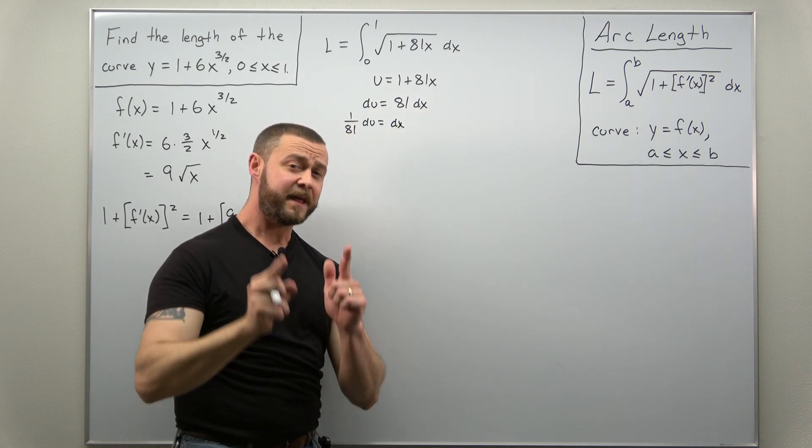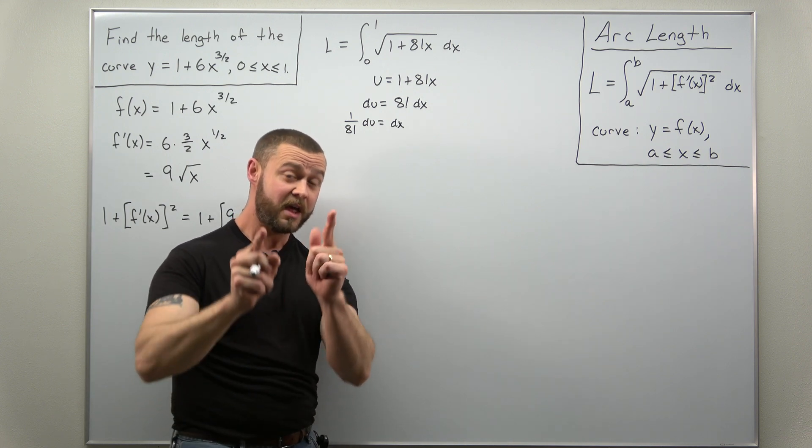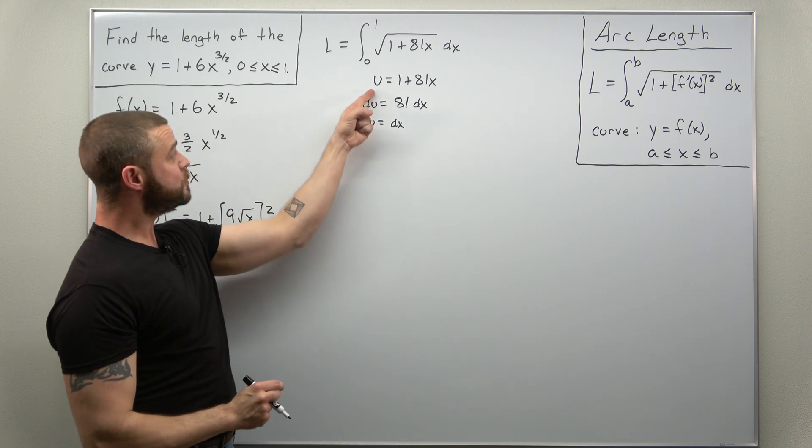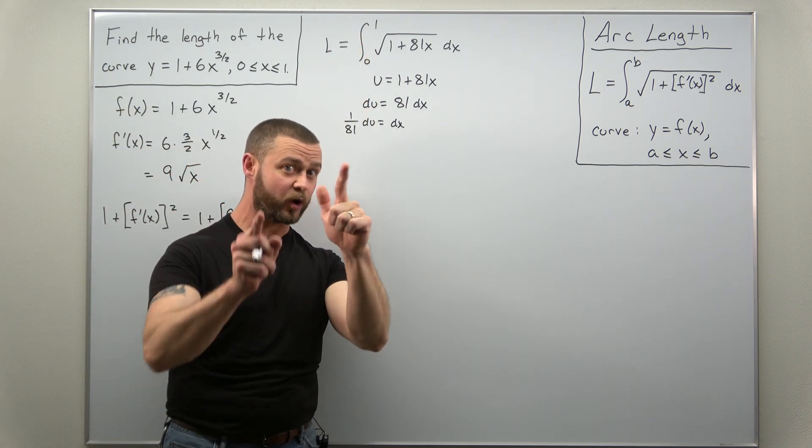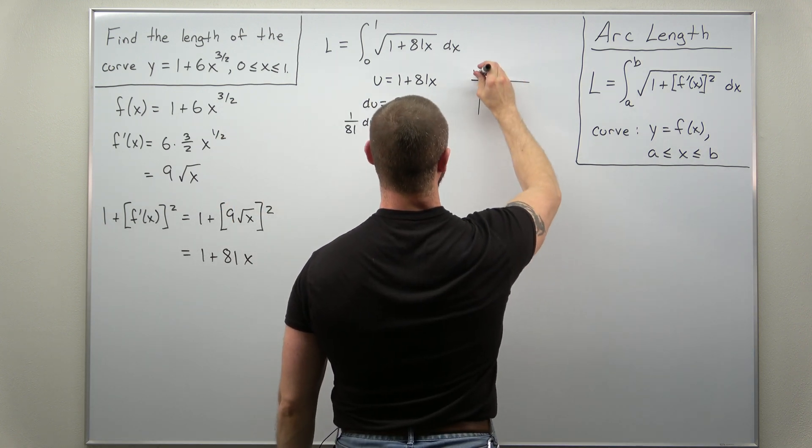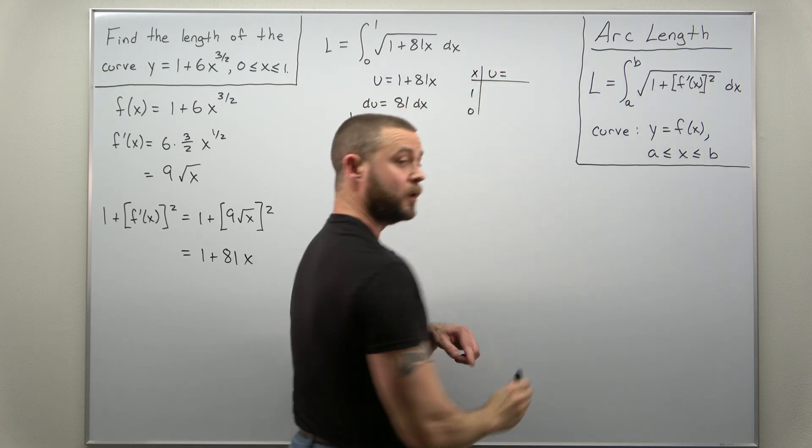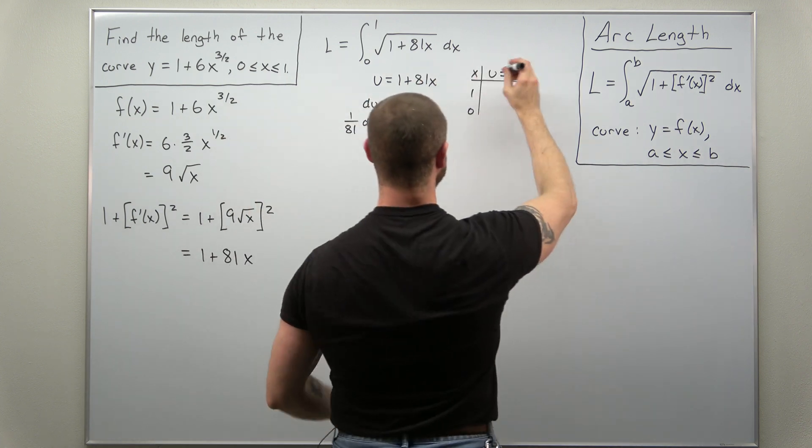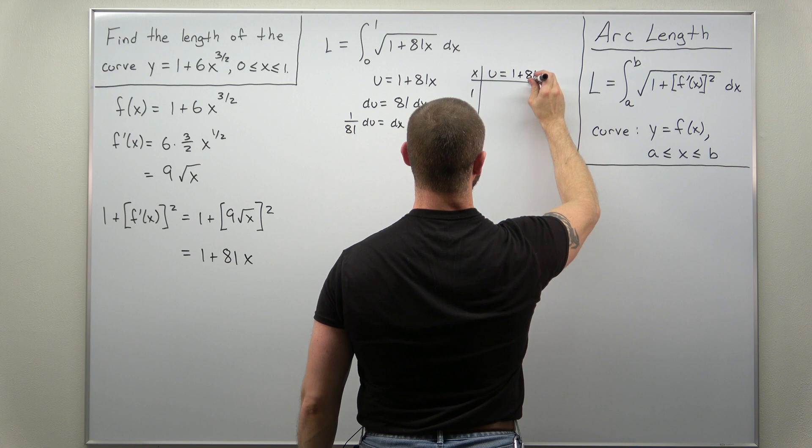And for those of you that have seen other videos in my Calculus 2 problem series and have been following along for a while, you know whenever we do a substitution with a definite integral, I always like to change or convert the limits. So if we convert here, our original x limits from 0 to 1, we just plug those into our substitution u, which we defined it for this problem as 1 plus 81x.